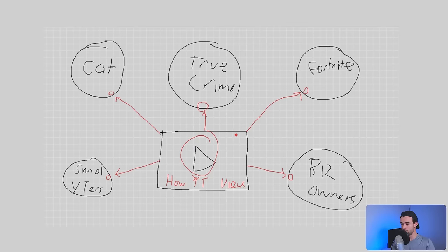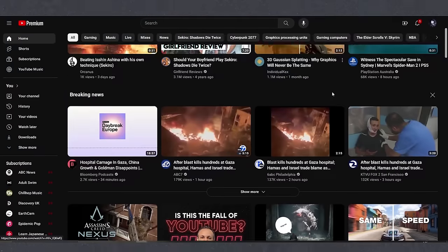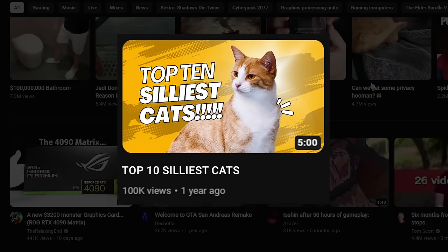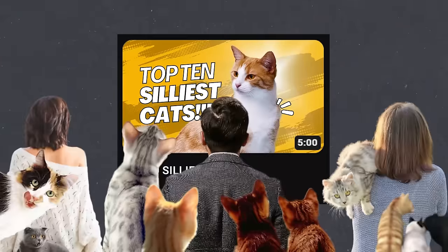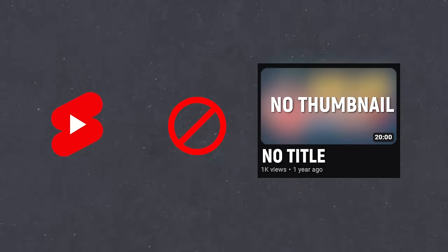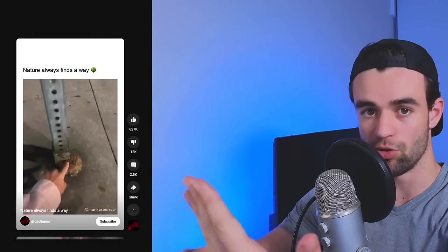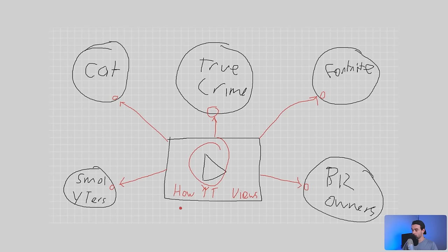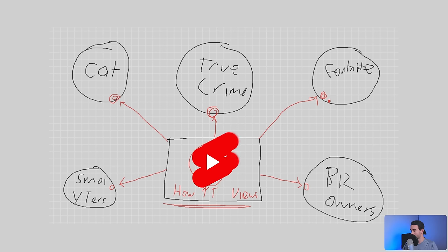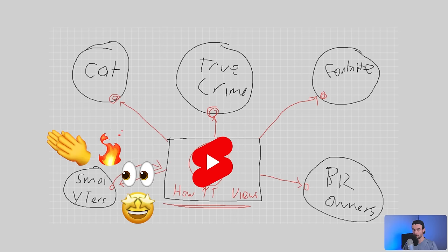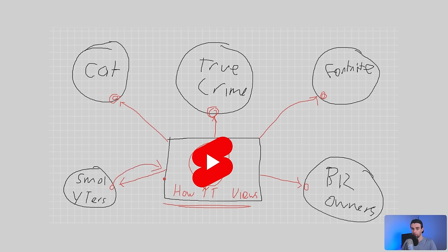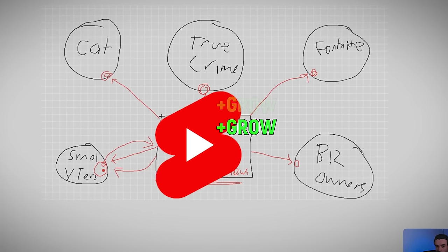To get data initially, the algorithm is going to promote your video to slightly more general audiences. For long form videos, it can show the video on the homepage or recommended and use the title and thumbnail to work out what kind of viewer would be interested in clicking. But for shorts, we don't have a title and thumbnail — all we have is a video, because people are just scrolling on the YouTube shorts feed. So the way collaborative filtering works with shorts is YouTube will push your short out to a tiny portion of general niches it thinks are related to the content. If one of these small test audiences actually watches and enjoys it, the algorithm will send the short to more similar users, promoting it to a larger portion of that audience, getting it more views.